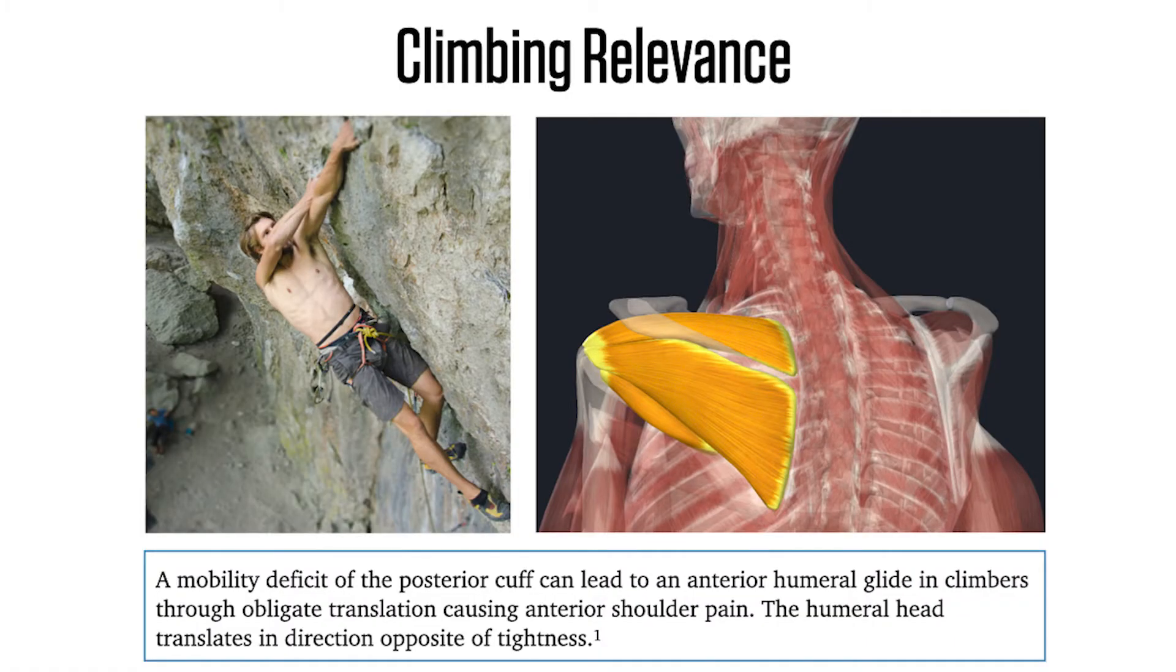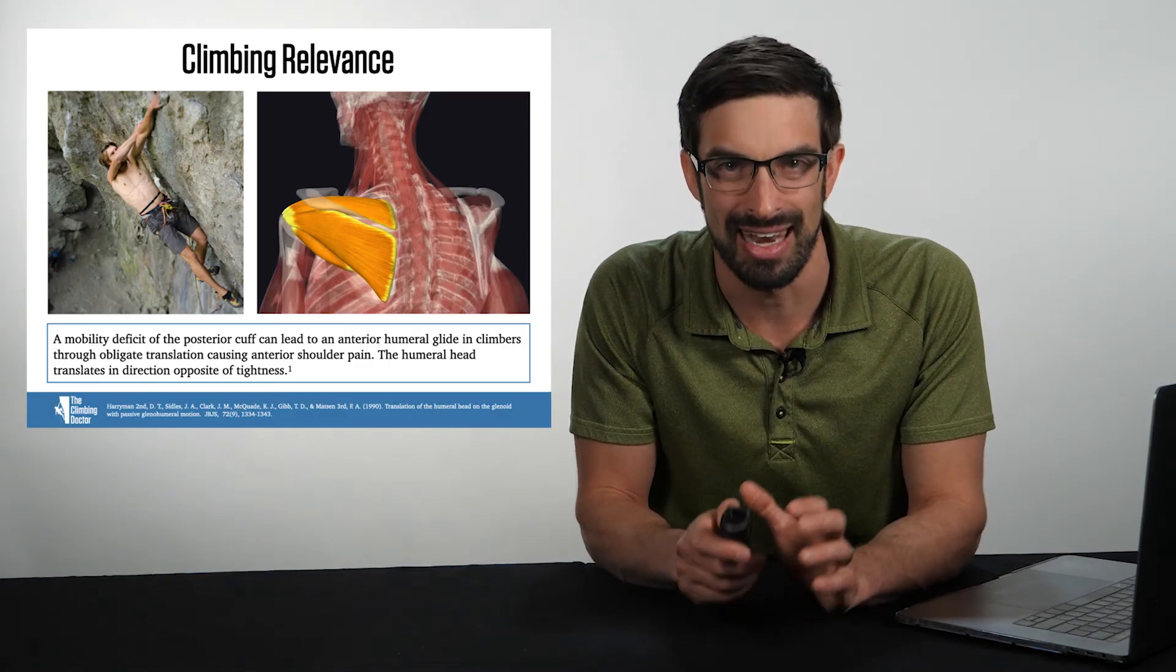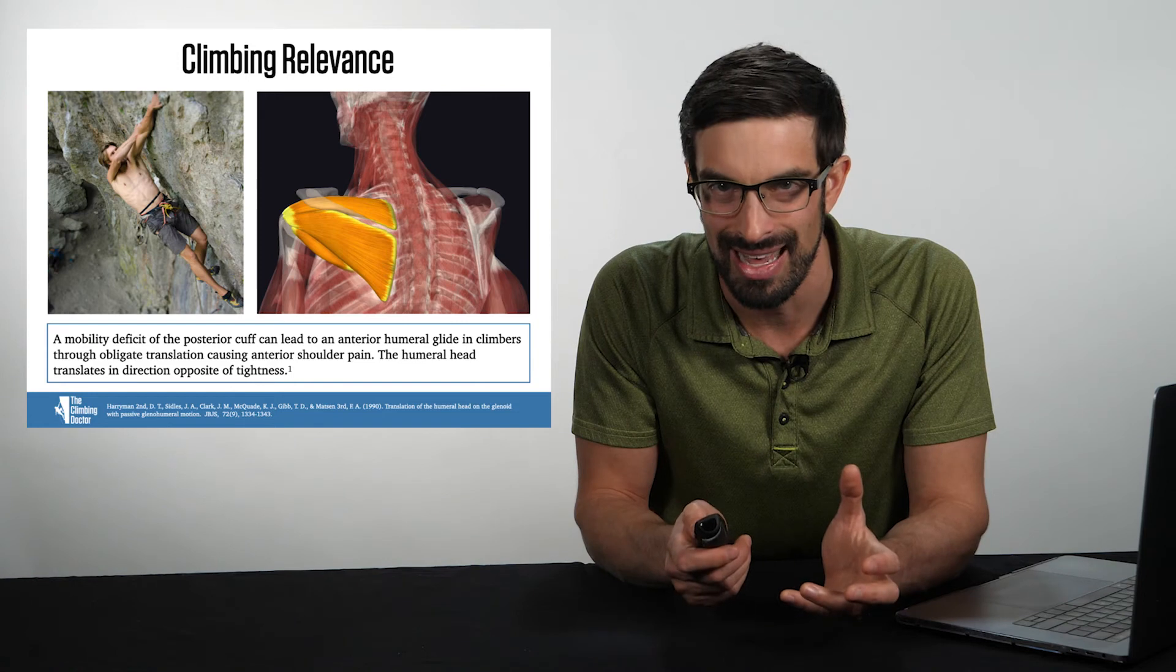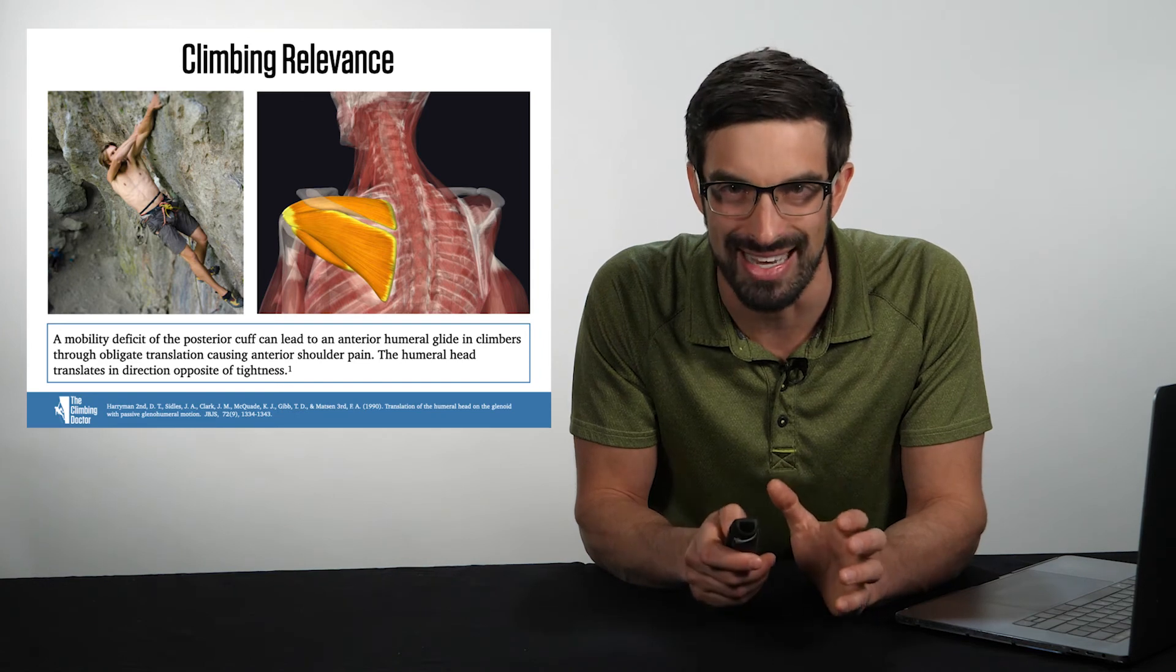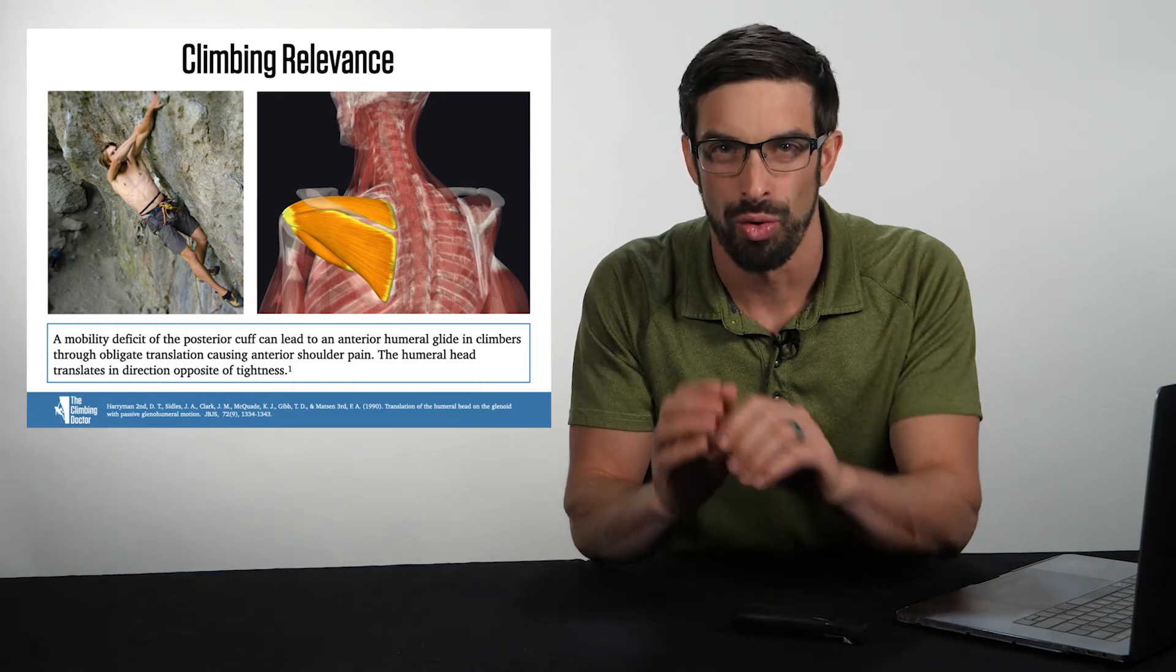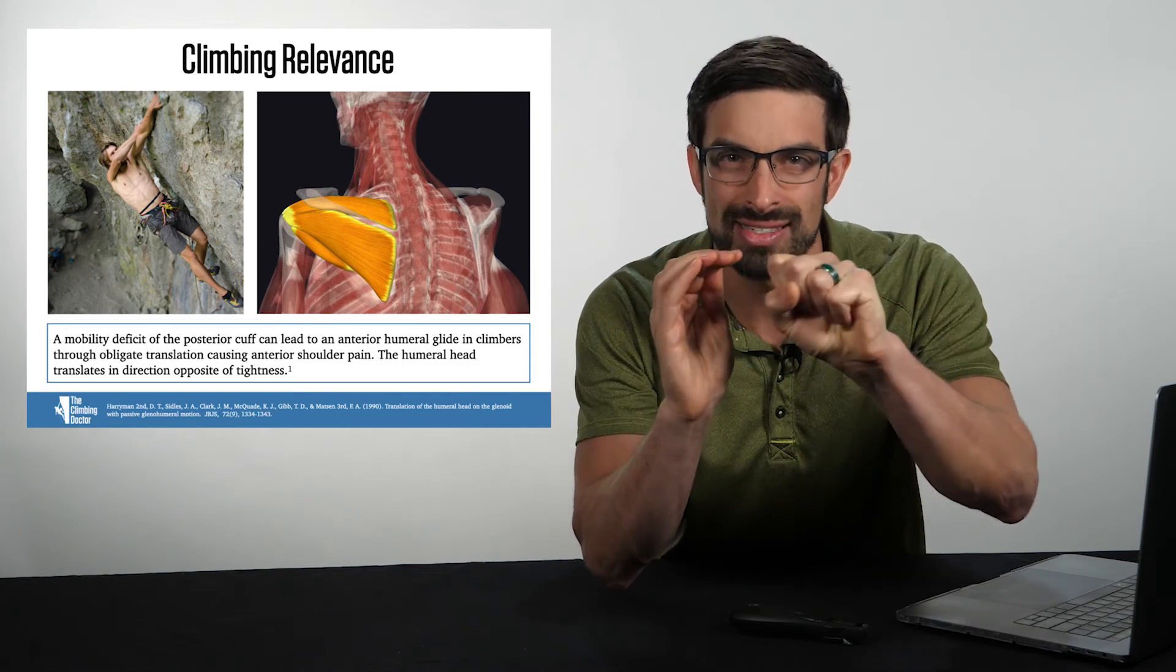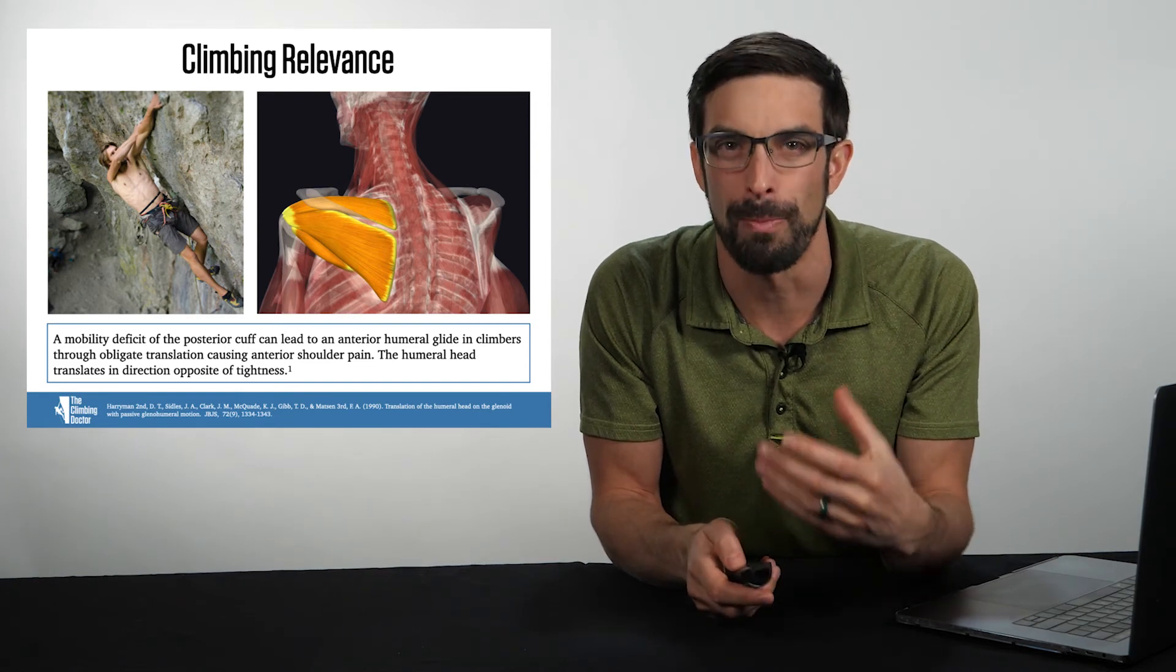A mobility deficit of the posterior cuff can lead to an anterior humeral glide in rock climbers through a concept called obligate translation. This was identified in a Harriman study and it showed that a tightness of the posterior cuff can lead to anterior shoulder pain and a migration anteriorly of the humerus. The humeral head will translate in the direction opposite of the tightness. Almost imagine a slingshot or some type of hammock that is pressing that humerus forward, squeezing it forward from a stiffness or shortness of the joint capsule or the posterior rotator cuff.